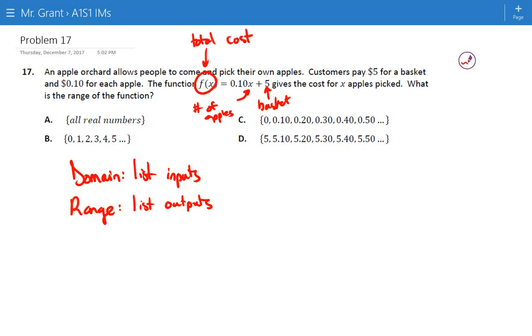So breaking this down, the thing you have control over is the inputs. You can change the number of apples that you pick. So number of apples is the domain of this problem. Whereas the range is a list of the outputs. The outputs are the answers, that's the total cost.